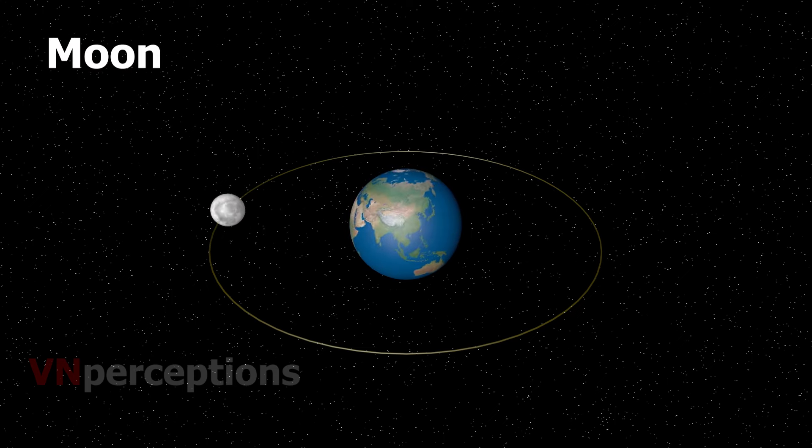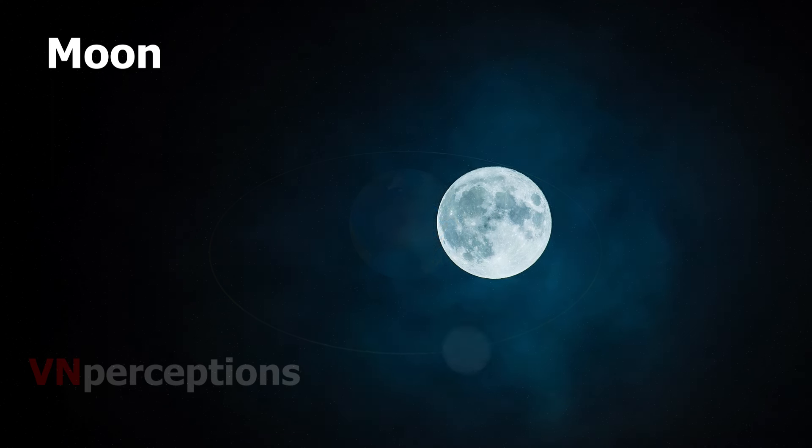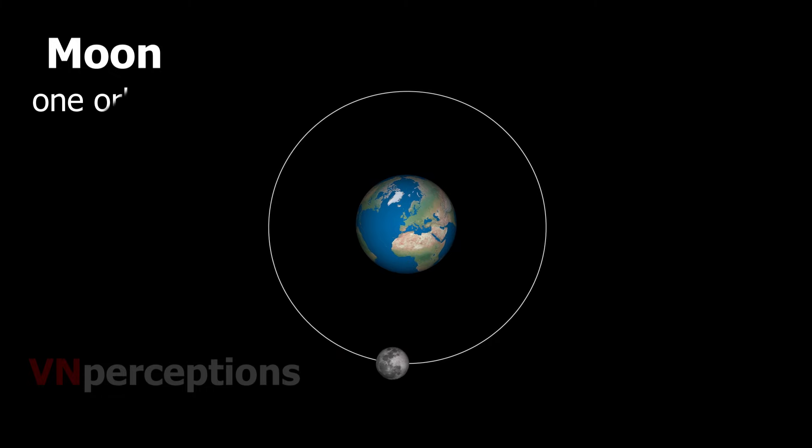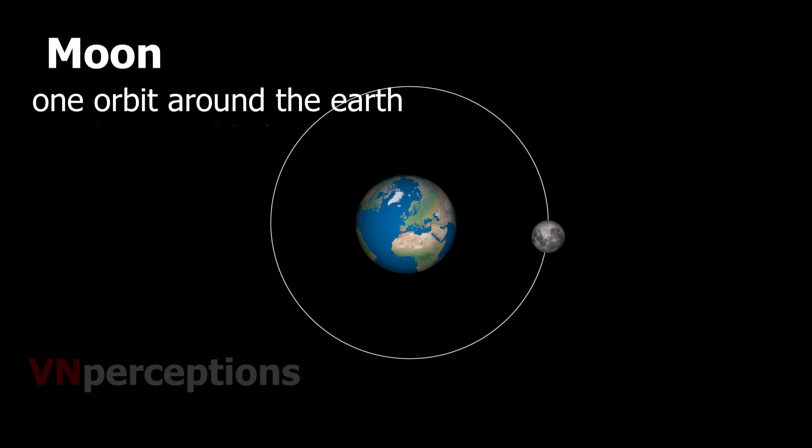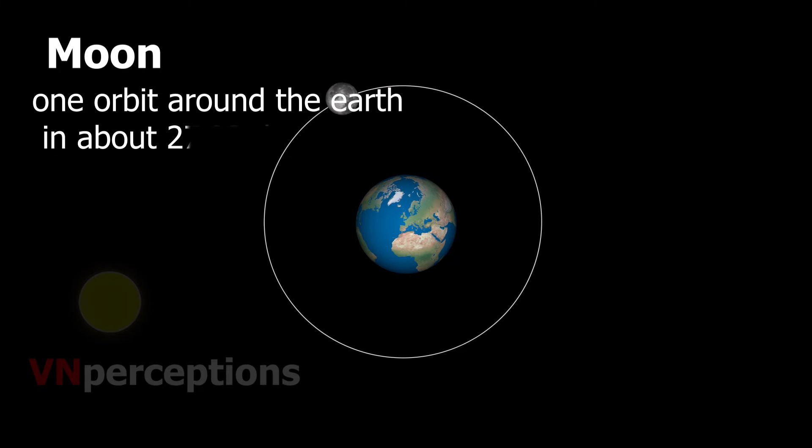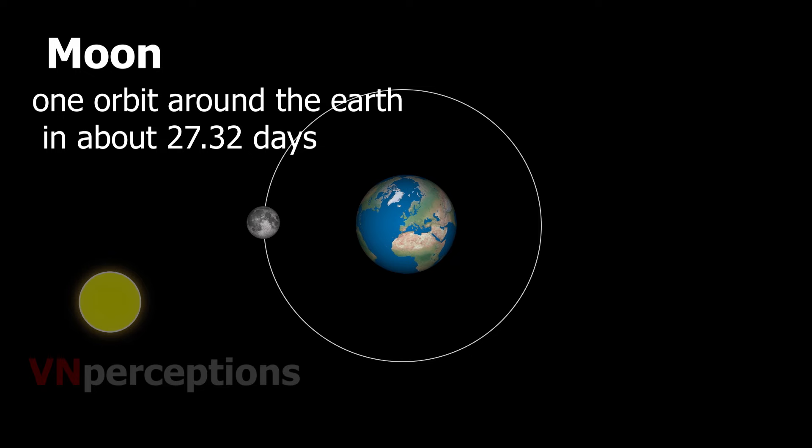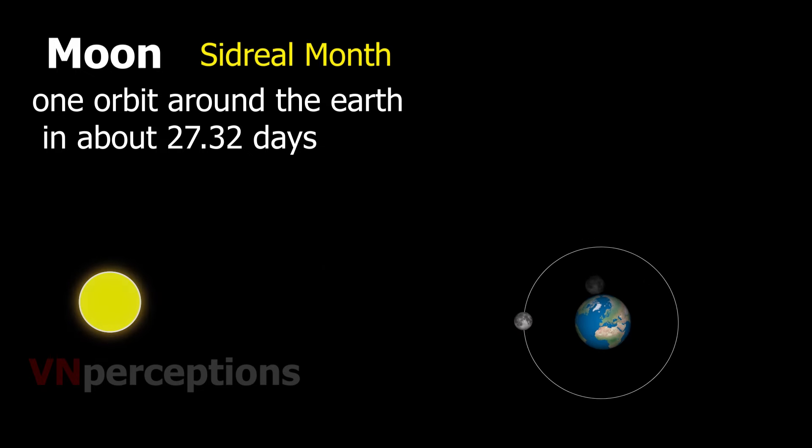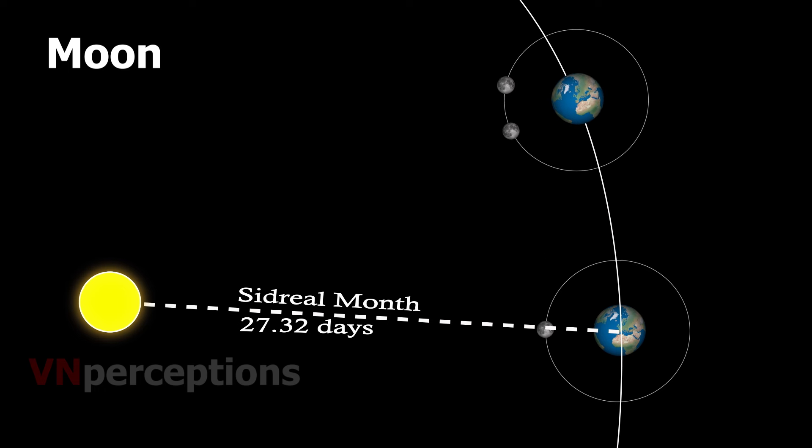Its diameter is only one quarter that of the Earth. It appears so big because it is nearer to our planet than other celestial bodies. The moon completes one orbit around the Earth with respect to the fixed stars in about 27.32 days. That is a sidereal month. The moon takes around 29.53 days to reach the same visual phase. That is the synodic month.